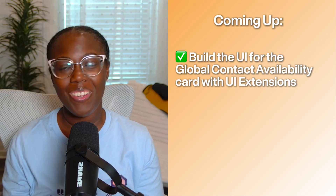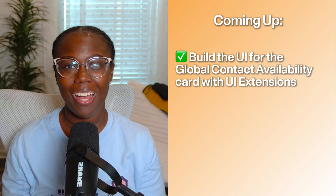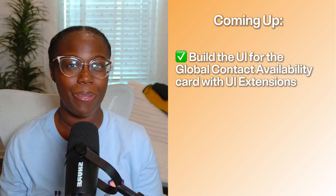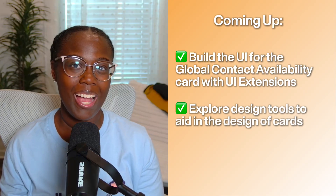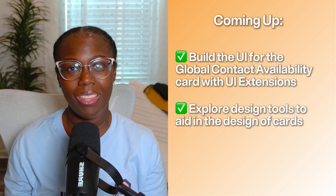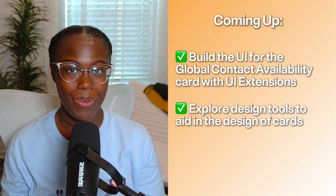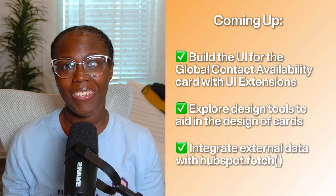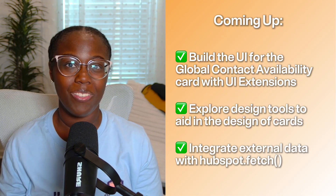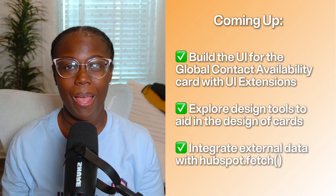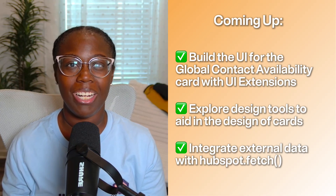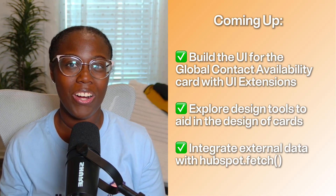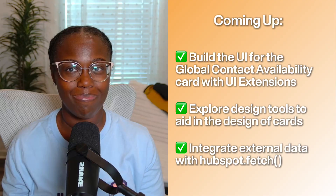In this video, we're going to bring all of those components together in our global contact availability card. We'll explore helpful design tools to plan our card's layout, then build the UI using HubSpot's UI components. We'll integrate the contact availability logic from our Next.js backend using HubSpot.fetch, and finally deploy our production-ready UI extension card directly into the HubSpot CRM.